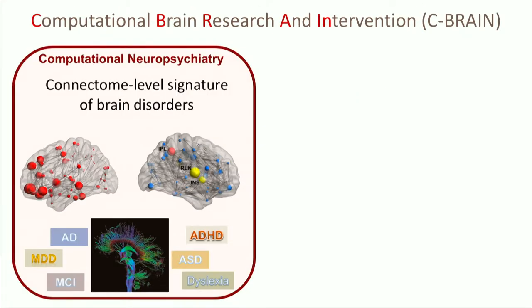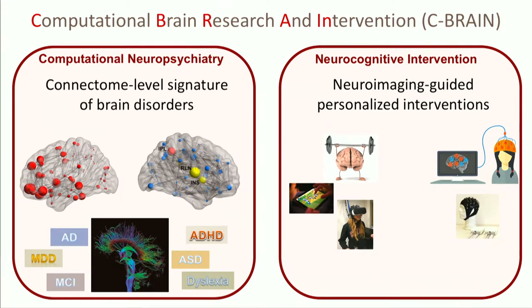The work in my lab focuses on computational brain research intervention. The main part is finding connectome-level signatures of brain disorders. We've published a lot on how large-scale network-level structures are affected in different disorders. But the ultimate goal is to use this knowledge to inform interventions — linking neuroimaging with available interventions.